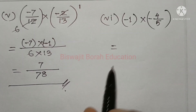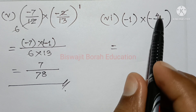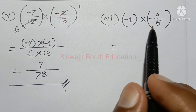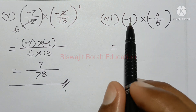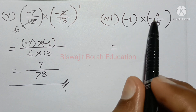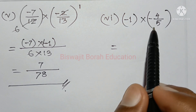Now the 5th number: the 5th number multiplied is minus 1 into minus 4 by 5. So if we multiply, minus 1 becomes 1, and that gives minus 4 by 5.